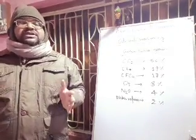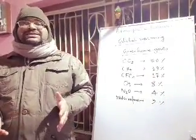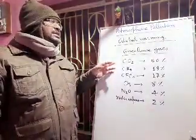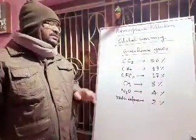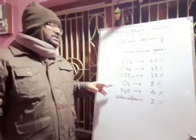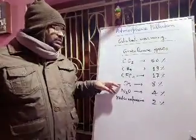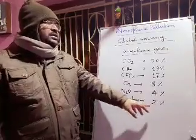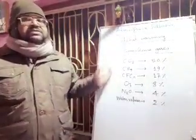This causes global warming — that means increasing the temperature of the earth. Now, the greenhouse gases and their percentage contribution towards global warming: carbon dioxide is contributing 50%, methane is contributing 19%, CFCs (chlorofluorocarbons) are contributing 17%, ozone is contributing 8%, nitrous oxide is contributing 4%, and water vapor is also contributing around 2% to global warming.